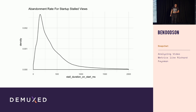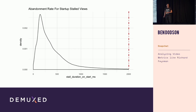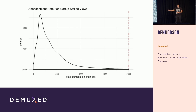Looking at Snap data — this is the abandonment curve for Snap, and this is where two seconds is. A few reactions: one, teenagers are very impatient. Two, Akamai's study clearly wouldn't work for us.